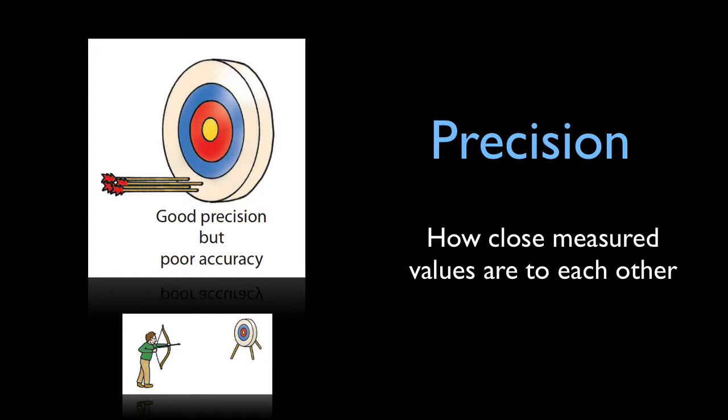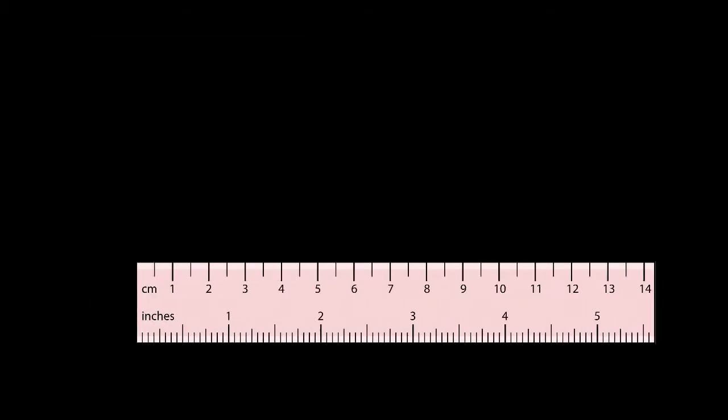You might say all the data points are closer together. Let's look at one of the simplest instruments, the ruler.